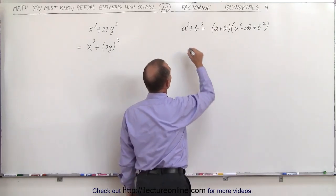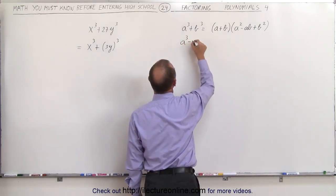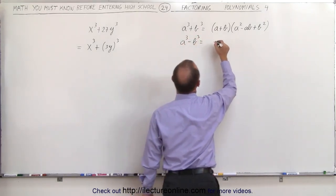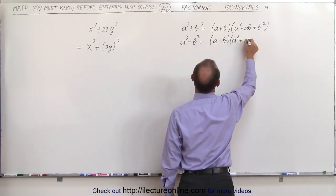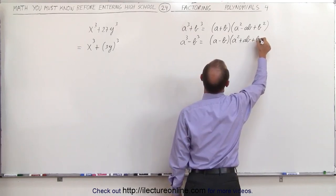Likewise, if we had, for example, the difference of cubes a cubed minus b cubed, that would be written as a minus b times the quantity a squared plus ab plus b squared.